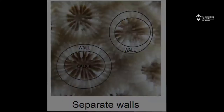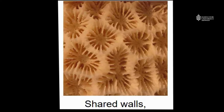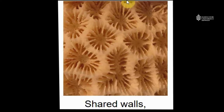Corallites can also have shared walls, as we see in this example here. We have our calus, or corallite opening, and the wall between adjacent corallites is shared. In this species, there is just a single polyp or corallite mouth within each set of walls.